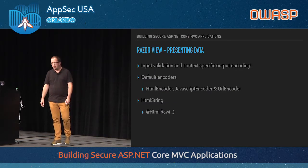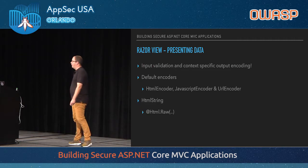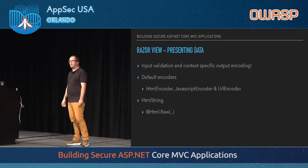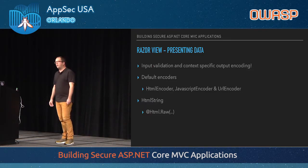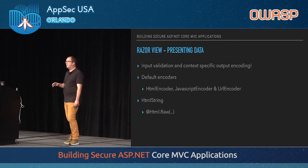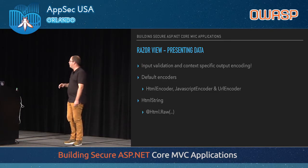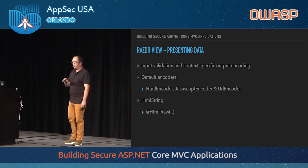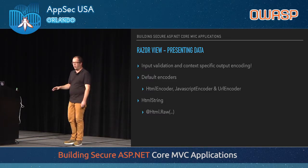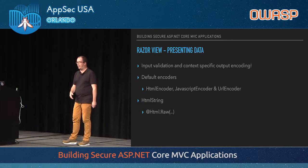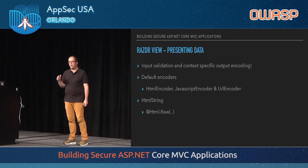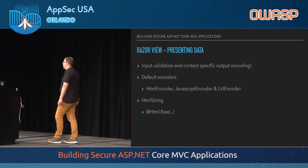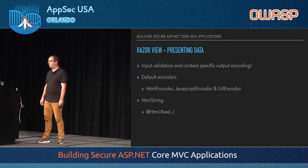To recap presenting data: input validation is important for every application. Do context-specific output encoding when rendering data back. The built-in encoders handle non-ASCII character sets like Chinese or Russian by encoding them to HTML equivalents by default, but you can configure code points to exclude from encoding via DI. Keep an eye on any use of HtmlString or Html.Raw, as that data will be rendered unencoded.